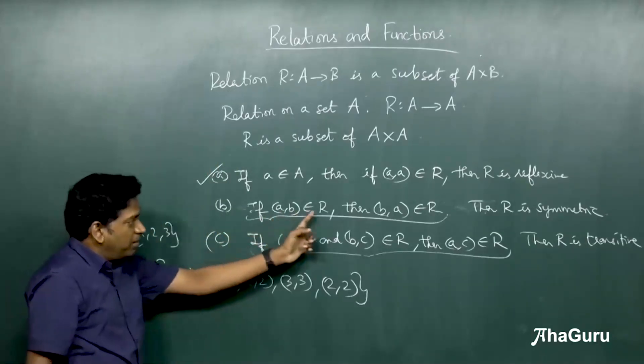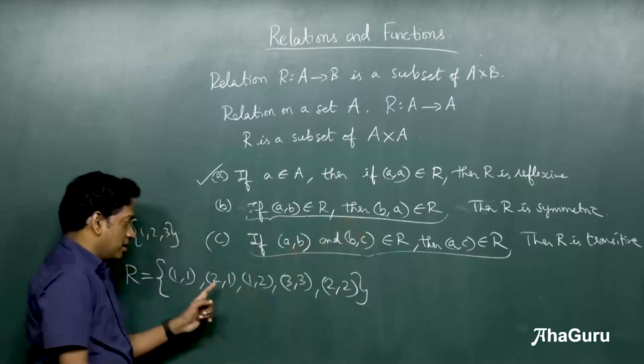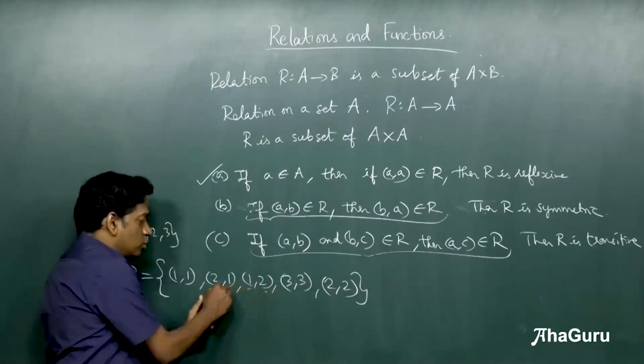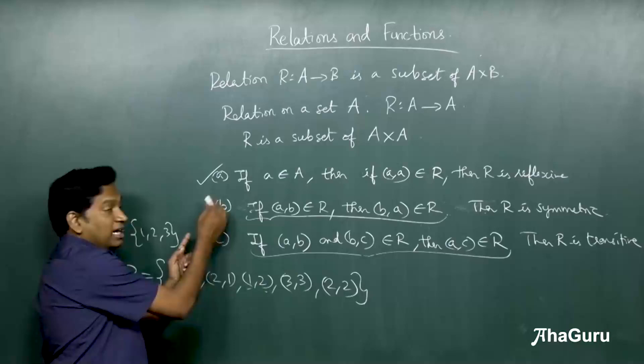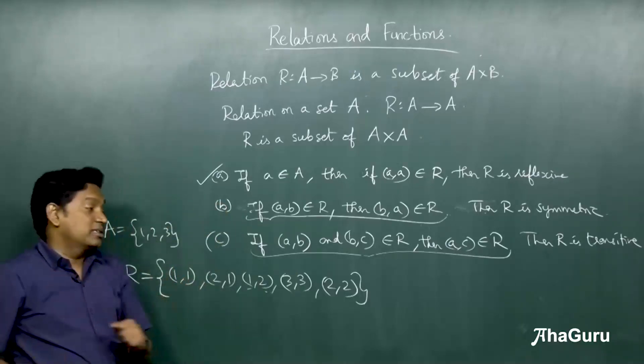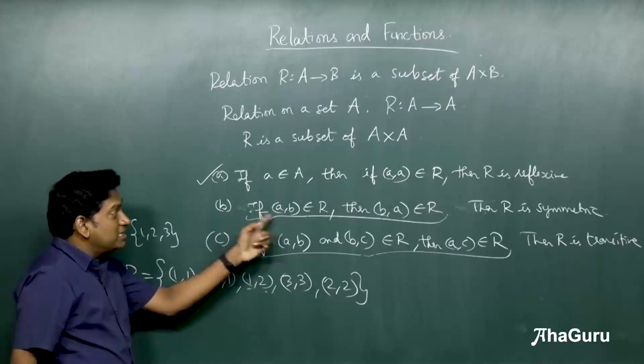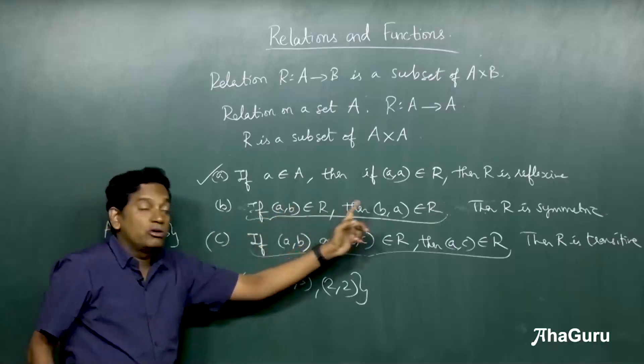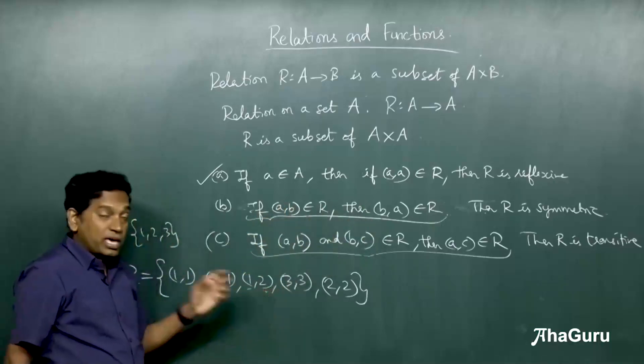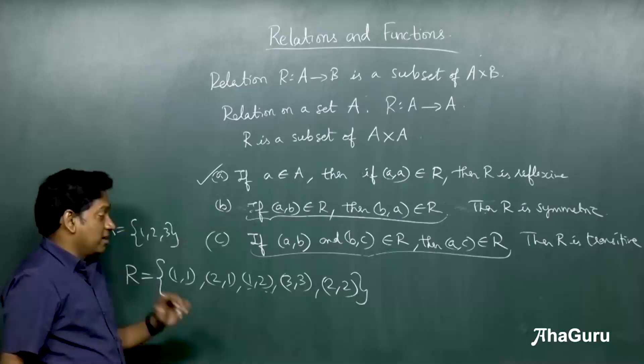Now, if AB belongs to R, then BA belongs to R. (1,2), if it belongs to R, then (2,1) must belong to R. Well, that condition is satisfied. Now, you can ask, sir, what if (1,3) is not there at all? But the condition doesn't say that every pair must belong to R. (1,3) need not.